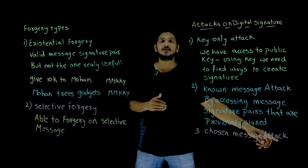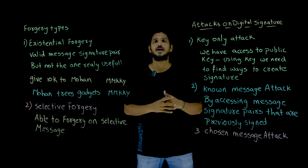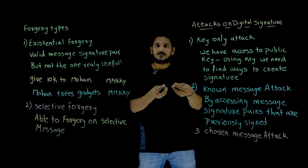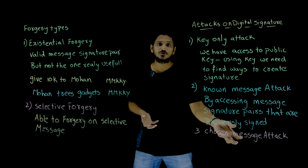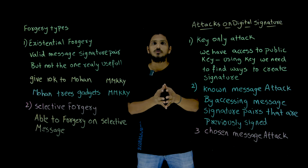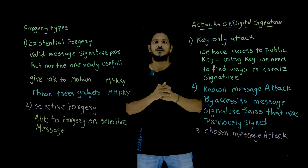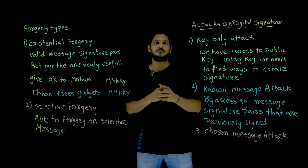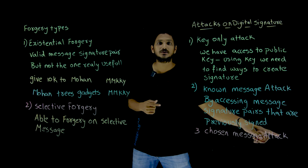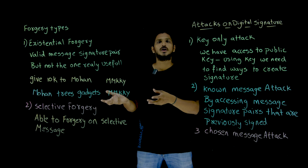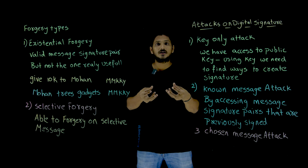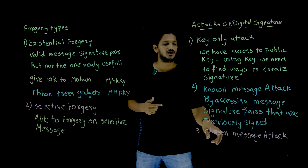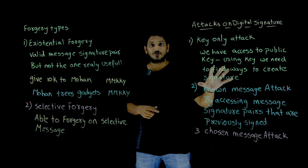The next one is chosen message attack. This is very similar to the chosen plaintext attack — you choose the message and somehow you have access to the owner and take the signature from them. In which situations is this possible? Lawyers that are near to you have that access to your signature; they can choose their own messages and ask you to sign them. You choose the message, take the signature from the owner, and based on the chosen message and signature pairs, try to identify the signature logic.